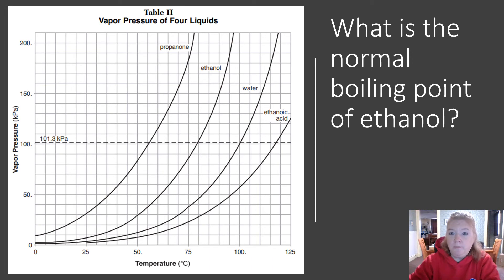What is the normal boiling point of ethanol? I find the normal boiling point line and go across until I hit the graph for ethanol. Then I go down and read the temperature. About 78 degrees Celsius - 75 right here, not quite at 80.